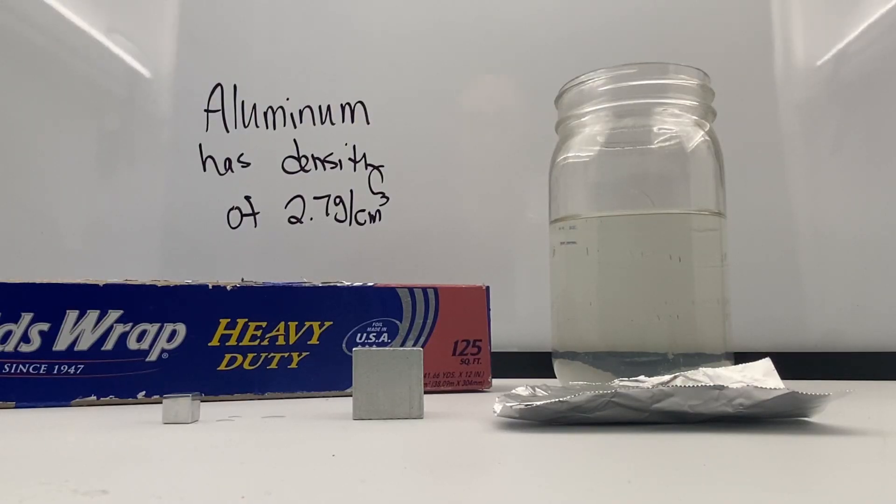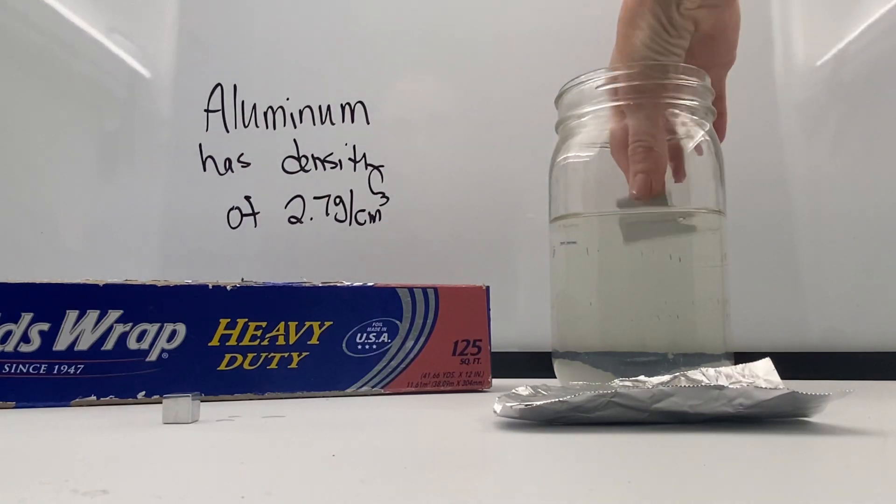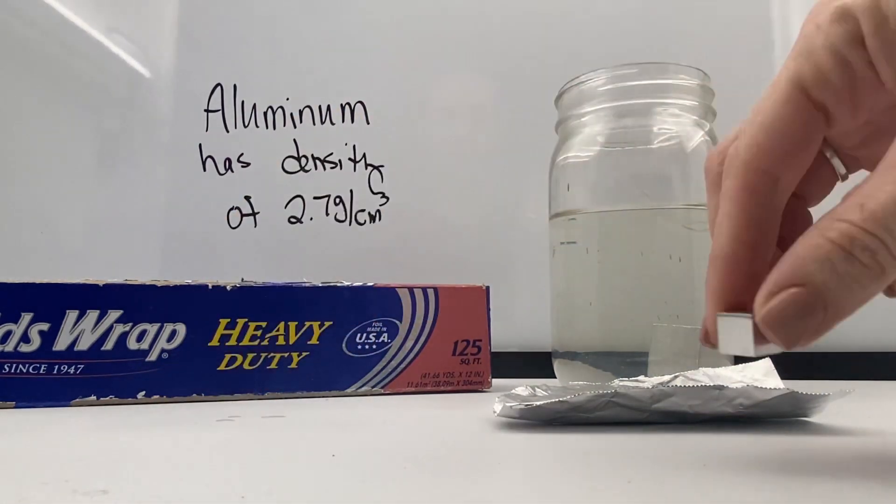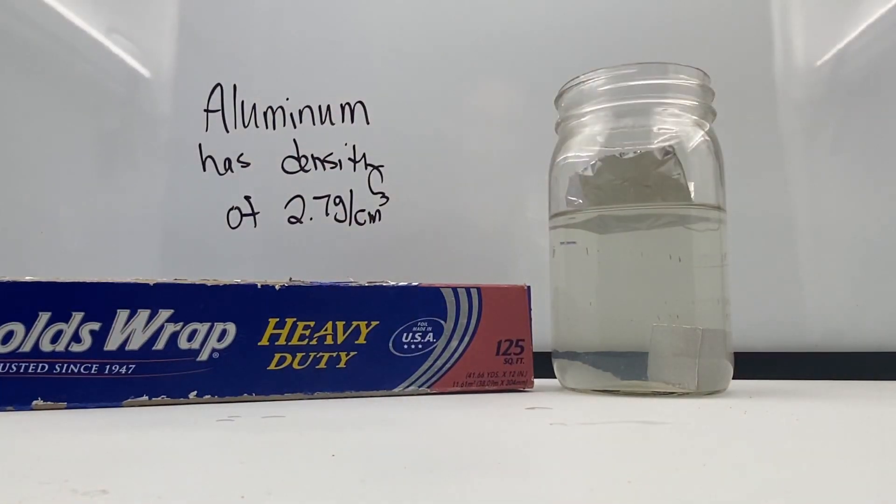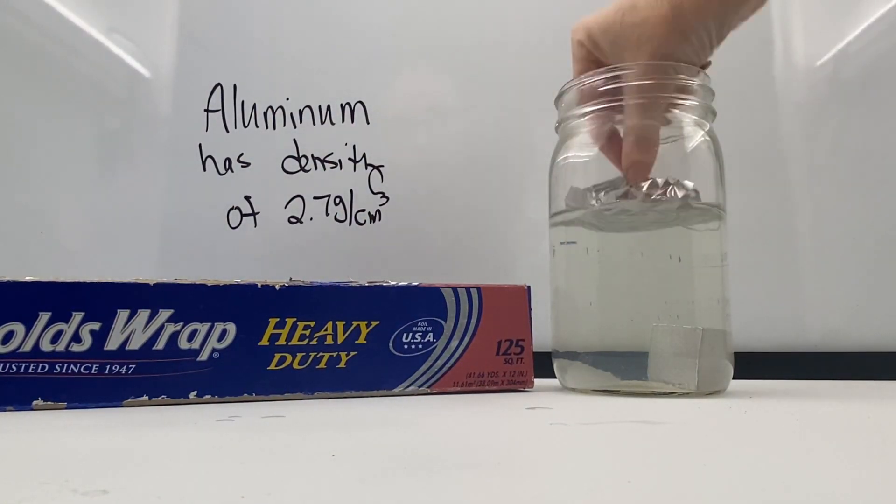This helps us see that if we had a substance like aluminum, a big chunk sinks and a little chunk sinks. But if we take a piece of aluminum foil and put it in water, it floats as well.